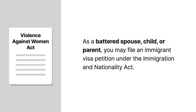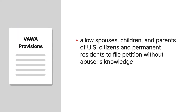So what is VAWA? It's the Violence Against Women Act. As a battered spouse, child, or parent, you may file an immigrant visa petition under the Immigration and Nationality Act. The provisions in the INA allow certain spouses, children, and parents of U.S. citizens, as well as certain spouses and children of permanent residents, to file a petition for themselves — it's self-petitioning. This is done without the abuser's knowledge, which allows victims to seek both safety and independence. The abuser is not notified about the filing whatsoever. This is a concern of many applicants who are afraid their former spouse, child, or parent will find out, but they won't — not from USCIS.